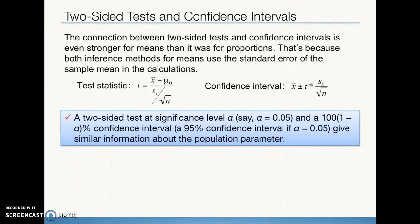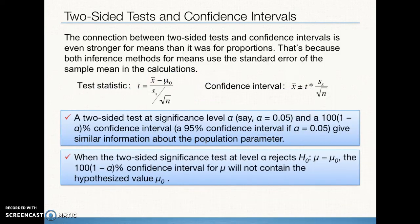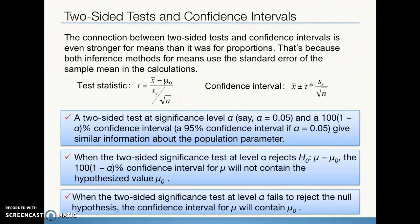A 95% confidence level, for example, corresponds to an alpha of 0.05. The range of plausible values in the confidence interval corresponds to the fail-to-reject region. Outside the confidence interval, in the tail areas, is the reject region — if a probability falls in those tails, we reject the null hypothesis. When a two-sided significance test at significance level alpha fails to reject the null hypothesis, the corresponding confidence interval will contain or capture the null hypothesis value for the mean.